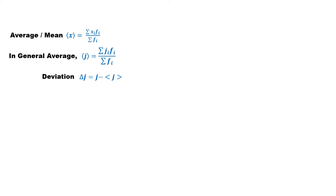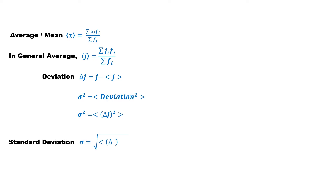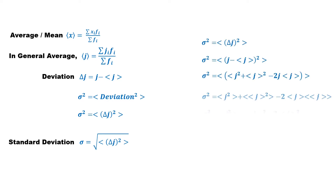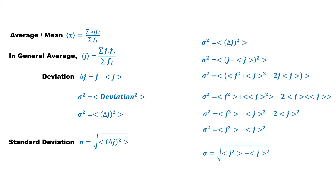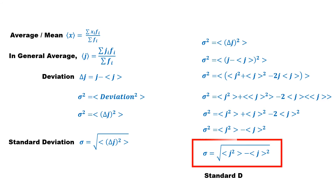If we take the average of the squared deviation, we get the square of the standard deviation in the measurement of that quantity. This means that standard deviation is the root mean square of the deviation in the measurement of a quantity. Simplifying this gives us the mathematical formula for standard deviation.